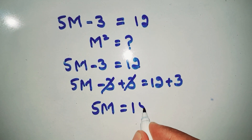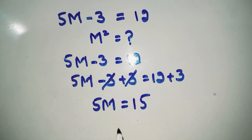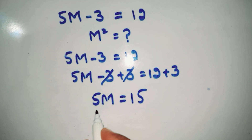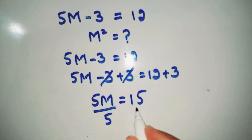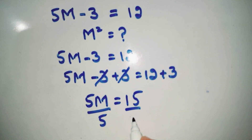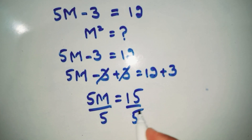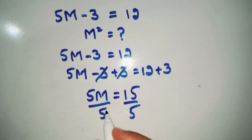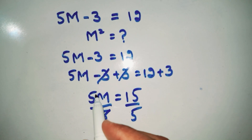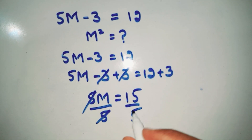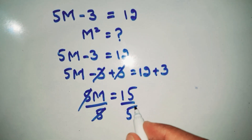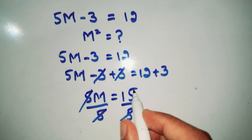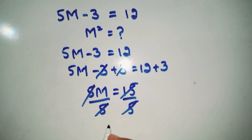Now divide both sides by 5. The 5s cancel on the left side, and 15 divided by 5 gives us 3 on the right side.